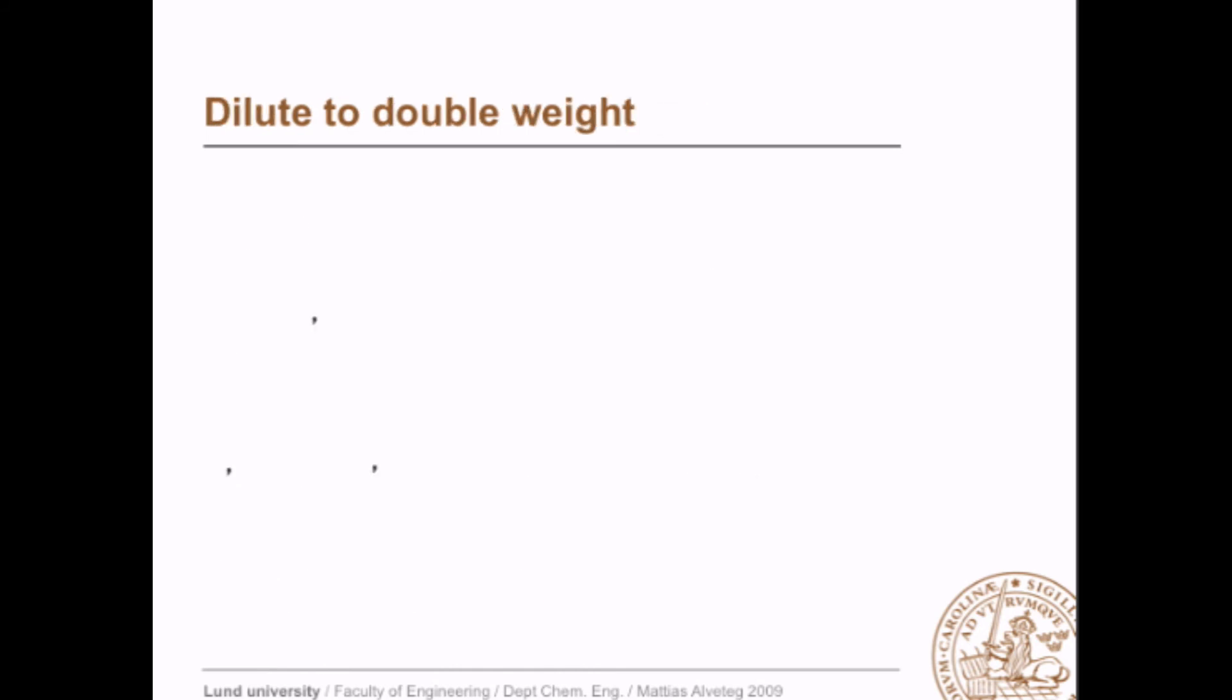The last example, dilute to double weight that you need to do in the lab on distillation. If we have, in the beginning, the weight fraction given, well, the weight fraction is how many grams you have of A divided by how many grams you have in total.